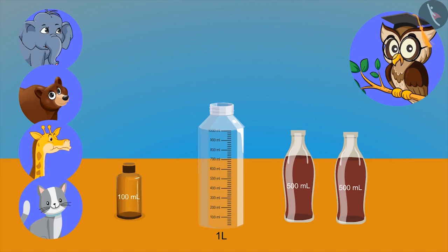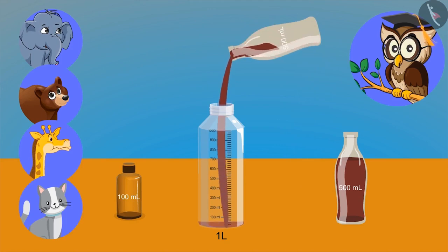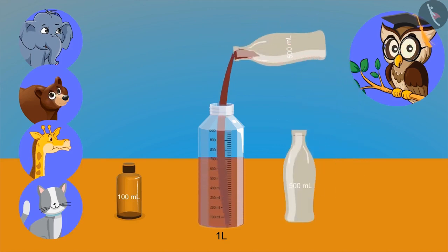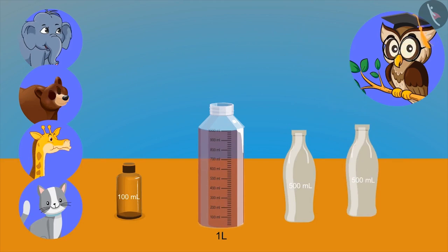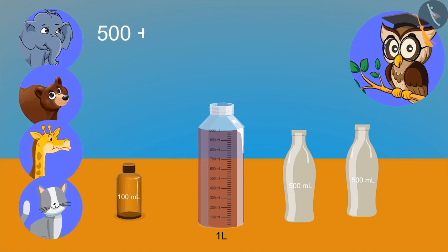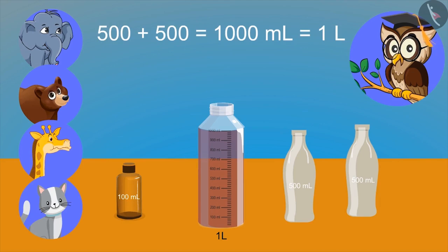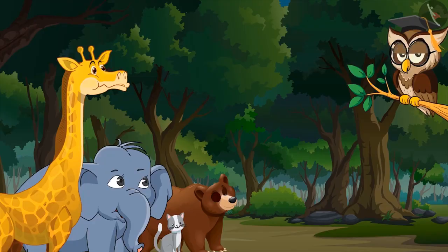Now try to put this in the empty bottle of 1 liter. Oh, it became full now! Yes, so what have we learned from this? Two 500 ml bottles make a liter. Right — on adding 500 milliliter to 500 milliliter, we get 1000 milliliters, which is 1 liter. 500 ml is also known as half a liter.